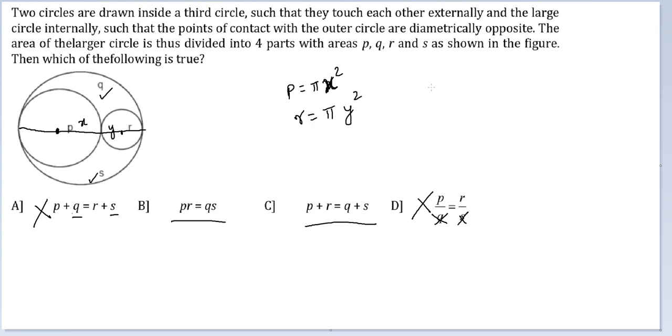Area of the total circle would be equal to P plus Q plus R plus S, which would be equal to pi times the square of X plus Y.